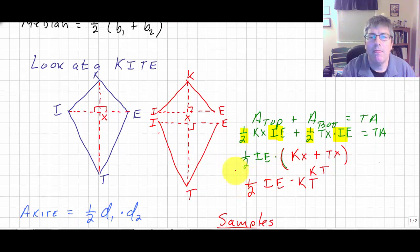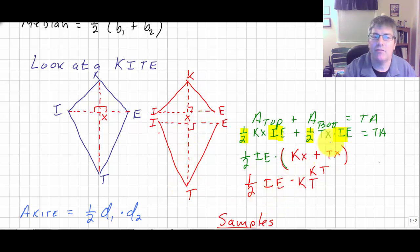Well, that's my formula for the area of a kite. IE is the diagonal and KT is my diagonal. So I have just derived the area of a kite.